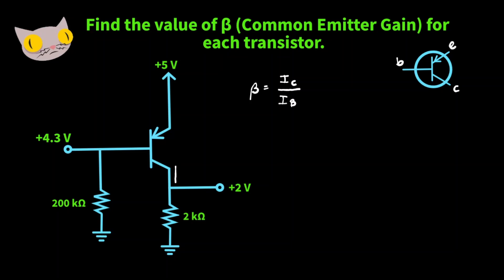The collector current is going to be the current running from the collector pin, and the base current will be running through the base pin. We also have the emitter current. First, let's find the value of the current going out of the collector pin. I_C is going to be equal to 2 volts over 2k ohms, which gives us a value of 1 milliamp.